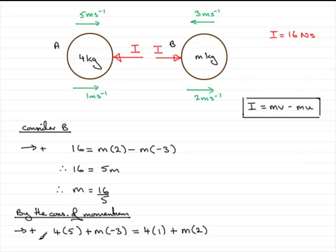So what we need to do is just simplify this. And if you do that you've therefore got 20 minus 3m equals 4 plus 2m.